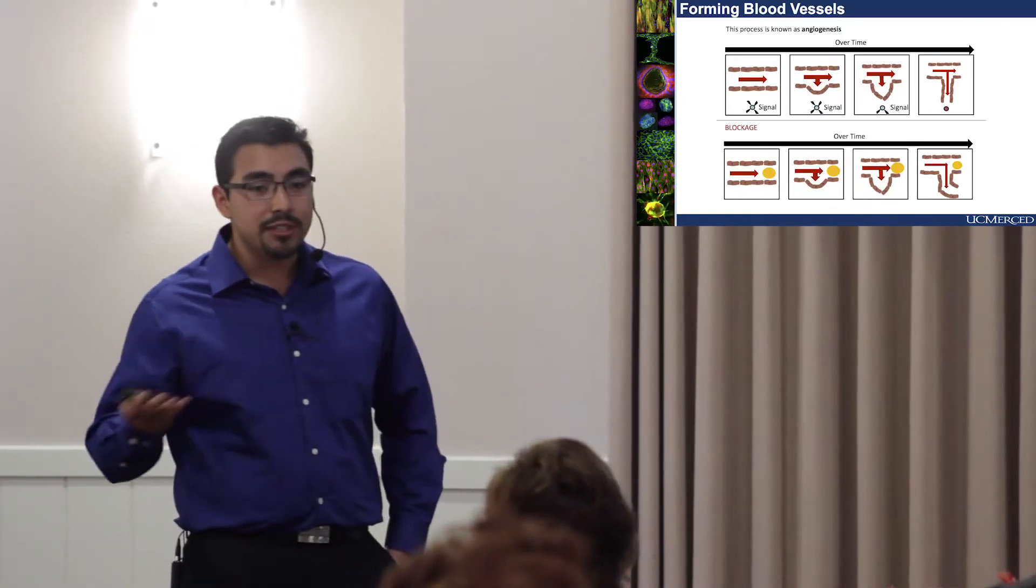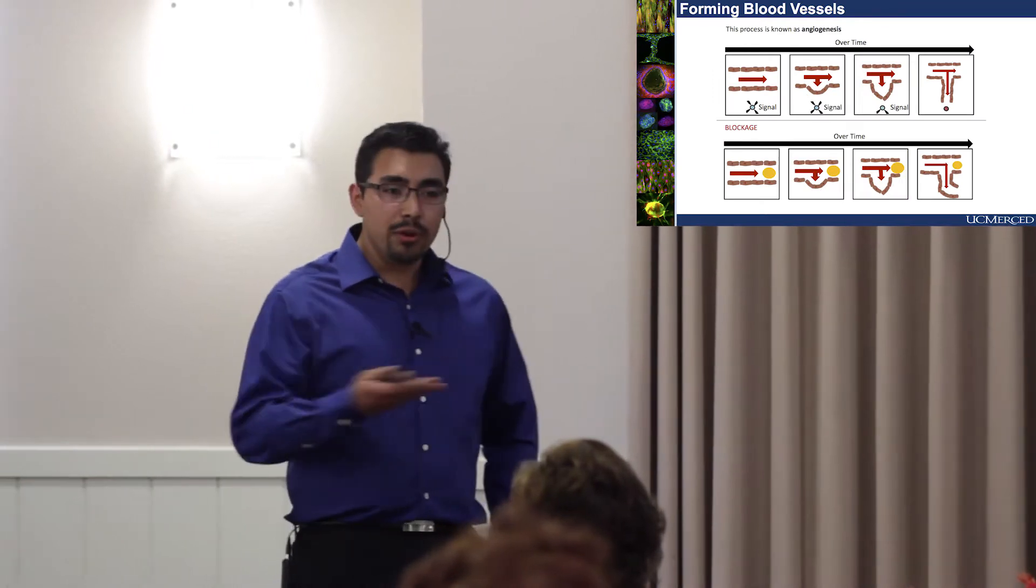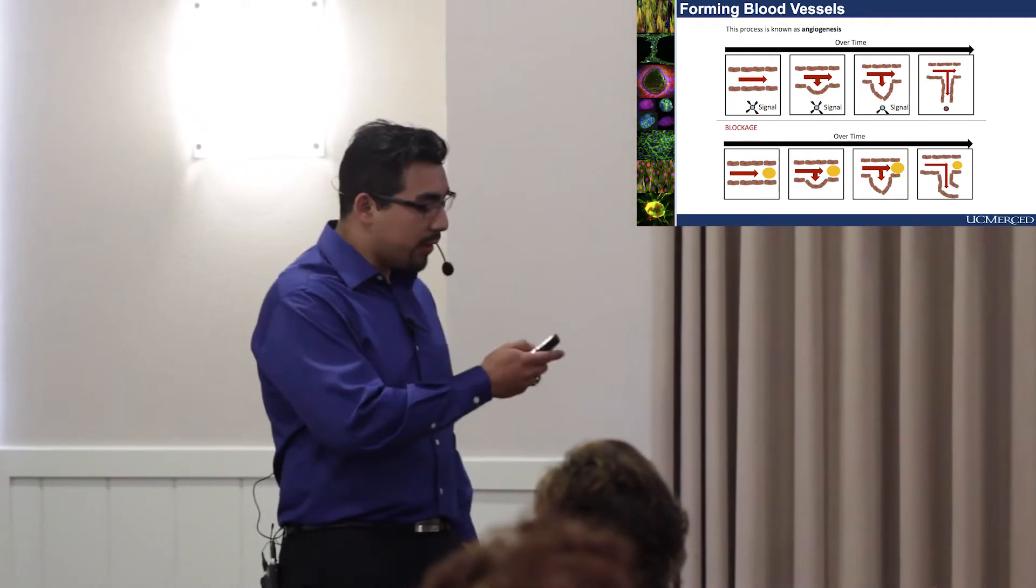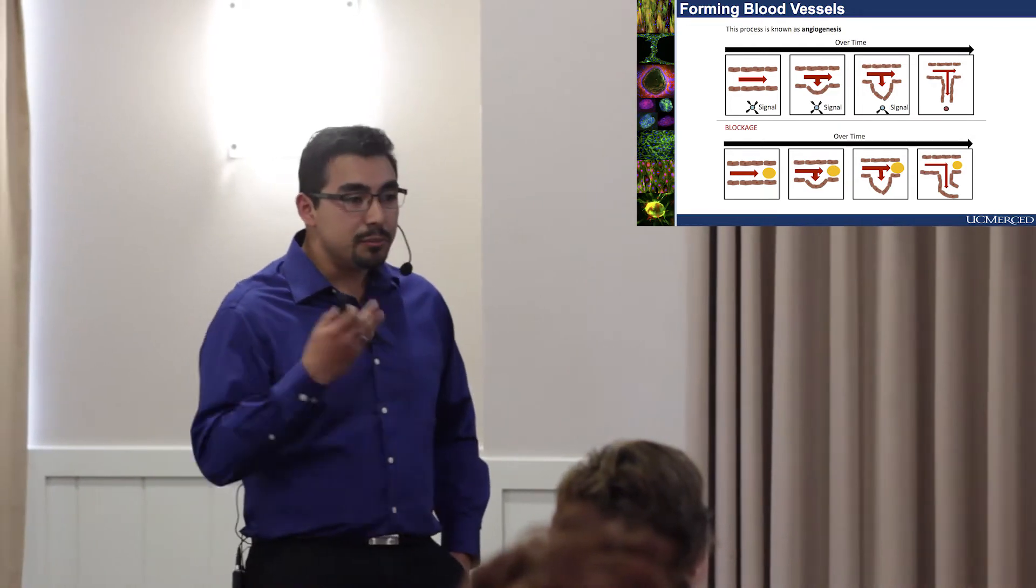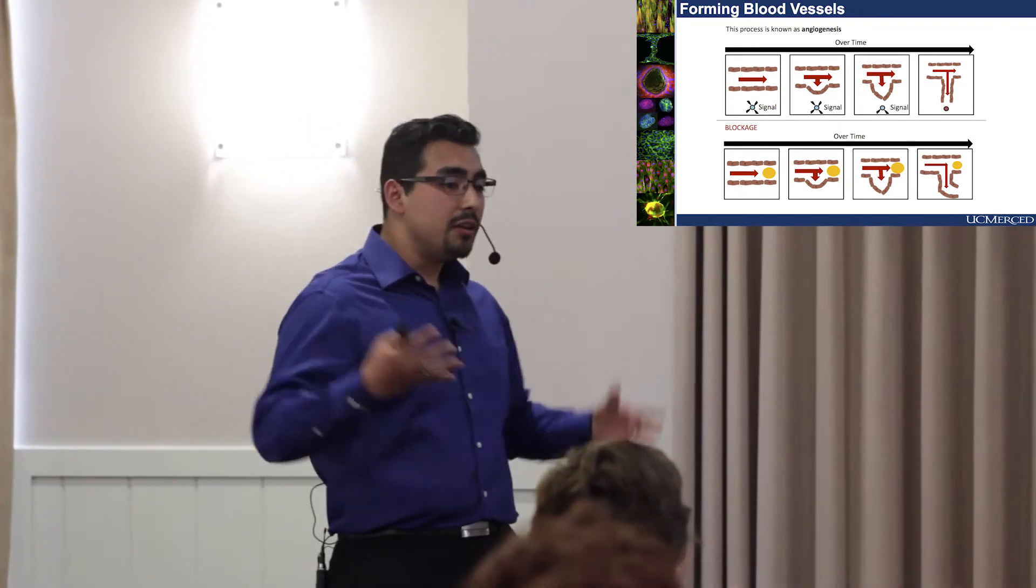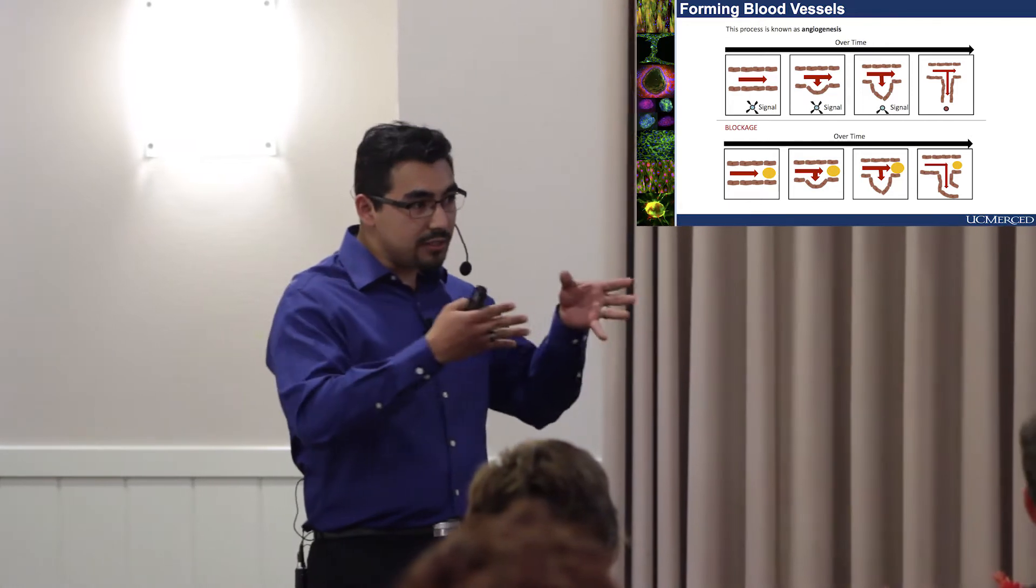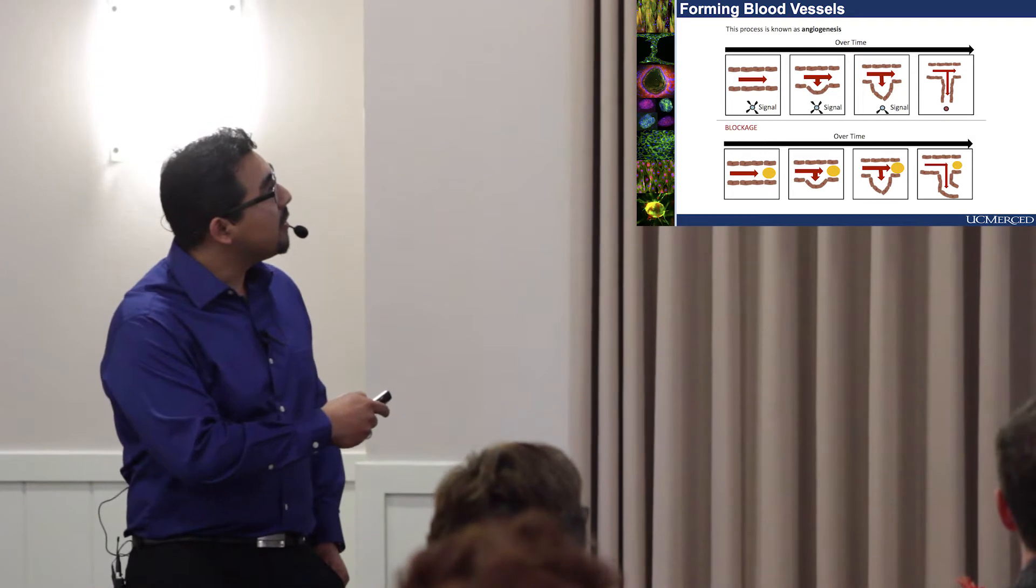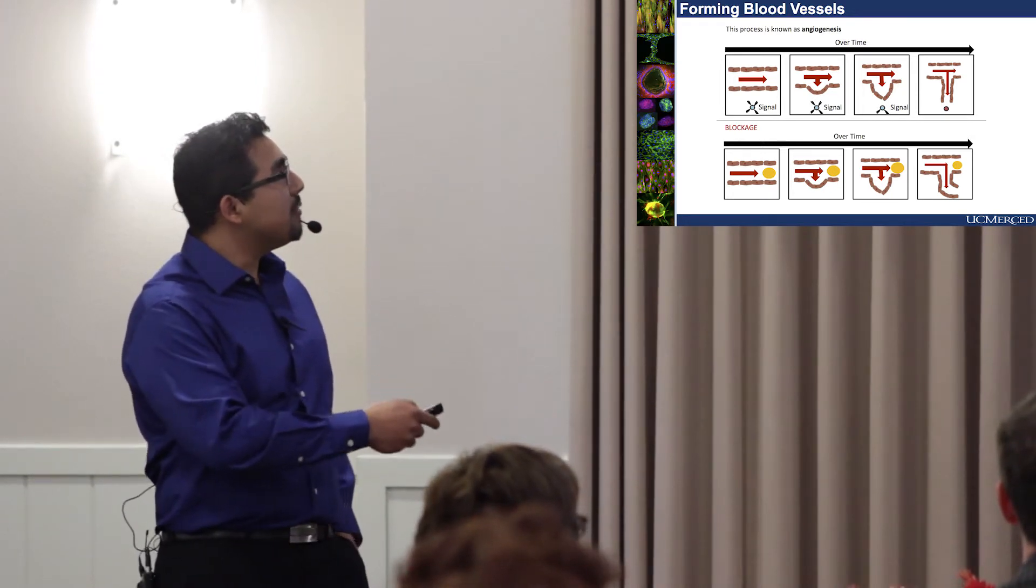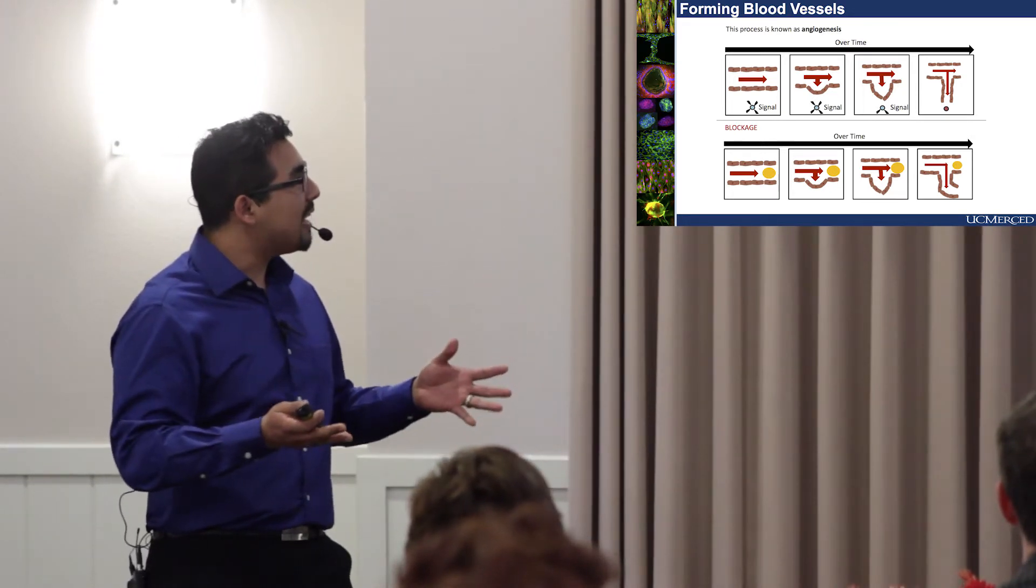Blood vessel formation happens everywhere in the body at different rates. One common way this happens is via a signal that is produced somewhere in the body, and blood vessels eventually sense the signal and start sprouting in a general direction. This is usually the most common way that this happens.